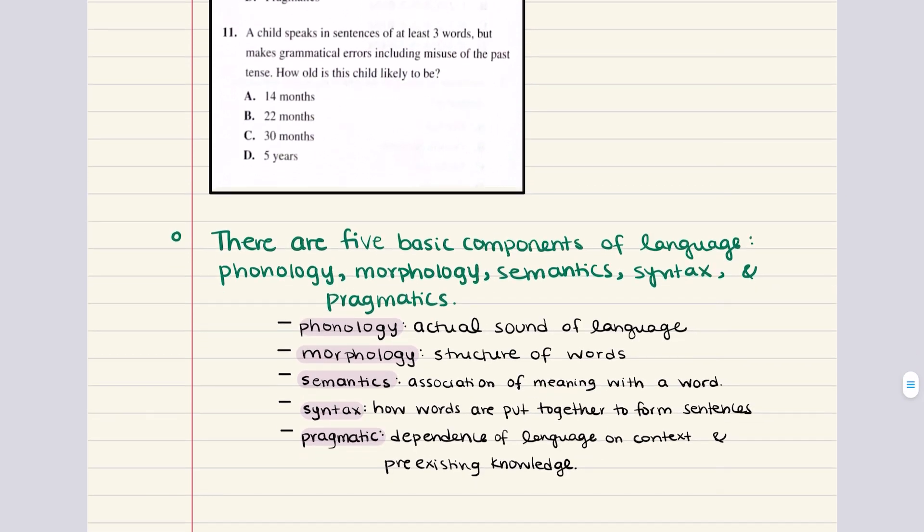Eleven says a child speaks in sentences of at least three words, but makes grammatical errors, including misuse of the past tense. How old is this child likely to be? A child who speaks in three word sentences but has not yet mastered most of the fundamental rules of language, including past tense, is likely to be between two to three years old. That's answer choice C. Between two to three years old translates to 24 to 36 months, and the answer choice that fits in this range is C because 30 months is between 24 to 36 months.